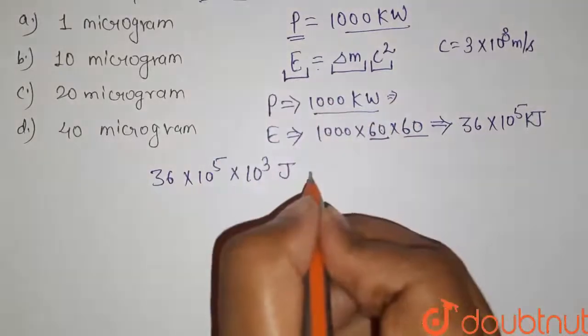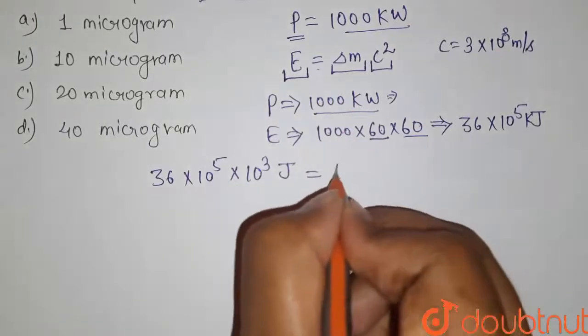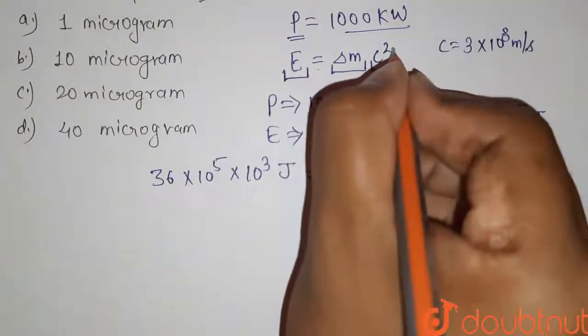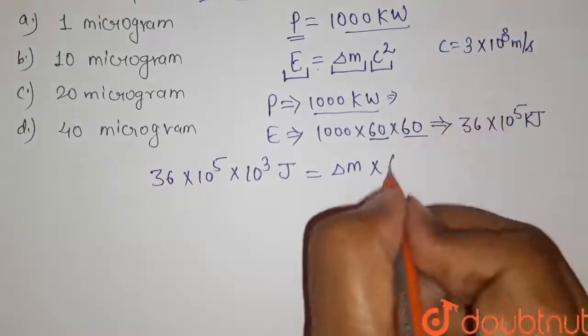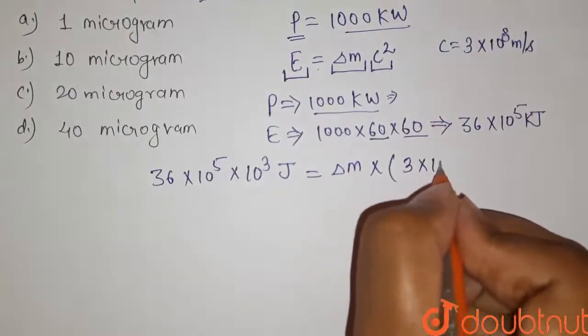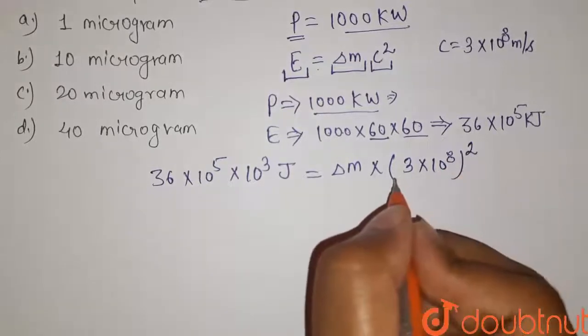So the energy equals delta m, that we have to find, times c squared. c has the value 3 times 10 to the power 8, so put it here. It will be 3 times 10 to the power 8, and its square.